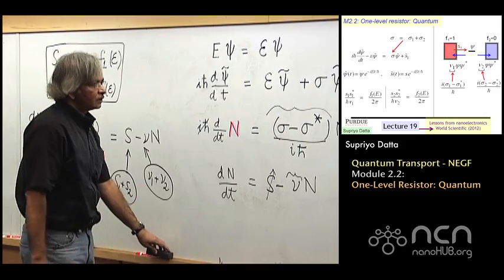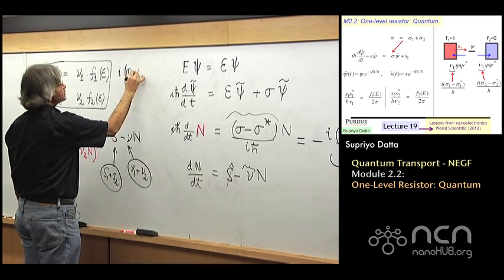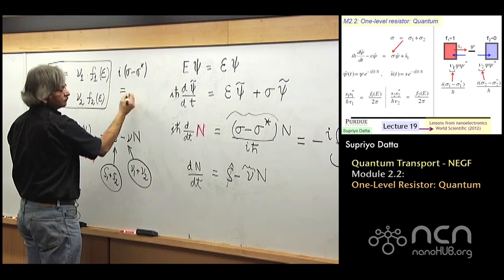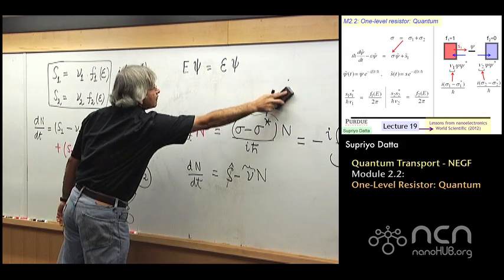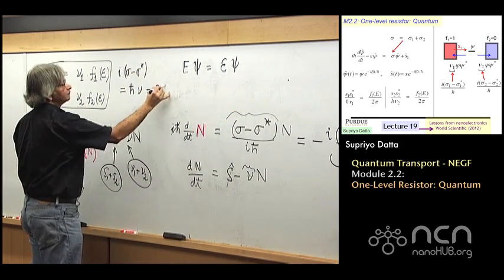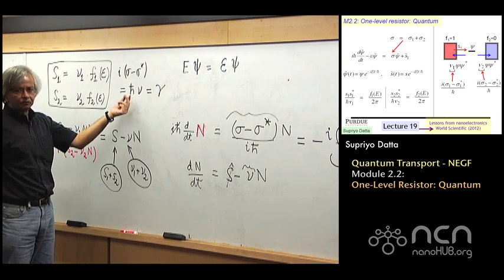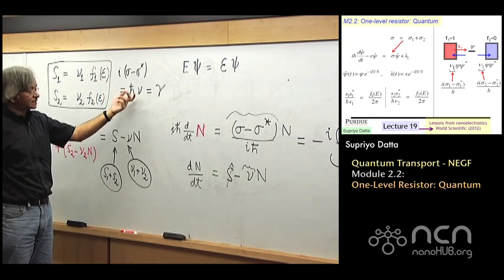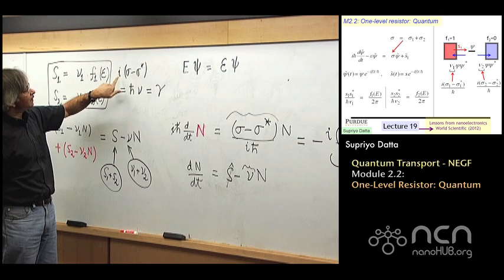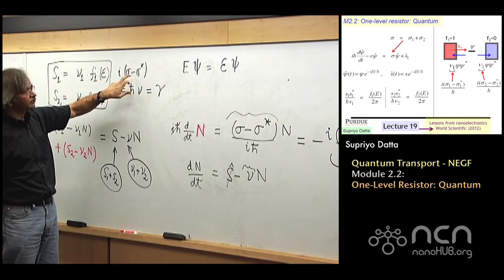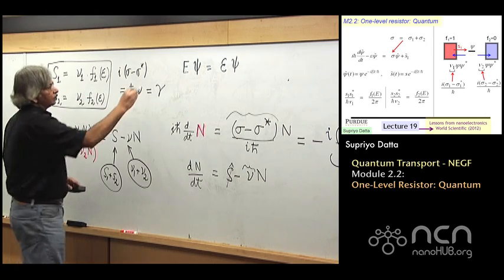Based on that, we could write: i·(sigma − sigma*) = h-bar·nu. That is the quantity which I'll write as gamma. This has dimensions of per second; when you multiply by Planck's constant (divided by 2pi, which is joule·second), together it has the dimensions of energy — it could be joules or electron volts. And that's what we'll write as gamma, which is twice the imaginary part of sigma, or the negative imaginary part.